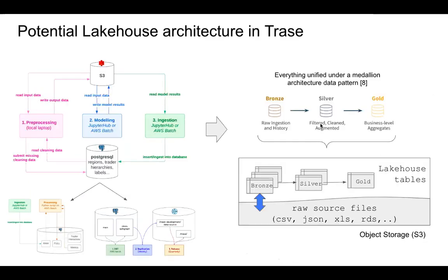The idea is how to go from all this complexity to something more streamlined using what's called a medallion architecture data pattern. Initially you have a set of bronze tables for raw ingestion — schema on read, from batch or streaming, with full history. After preprocessing you get silver tables, which are filtered, clean, and augmented. After applying models you get gold tables, which are for end uses and analytics. All of this happens on the object storage — you read and write directly to the S3 object store.